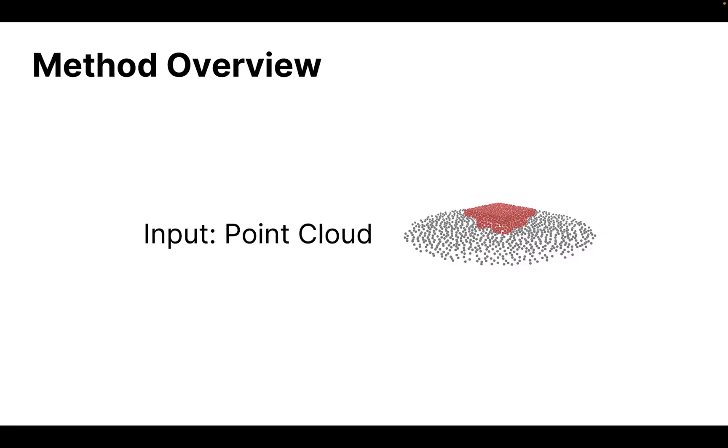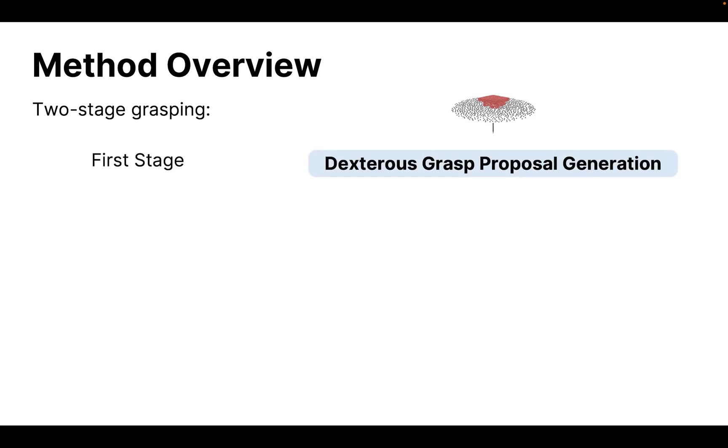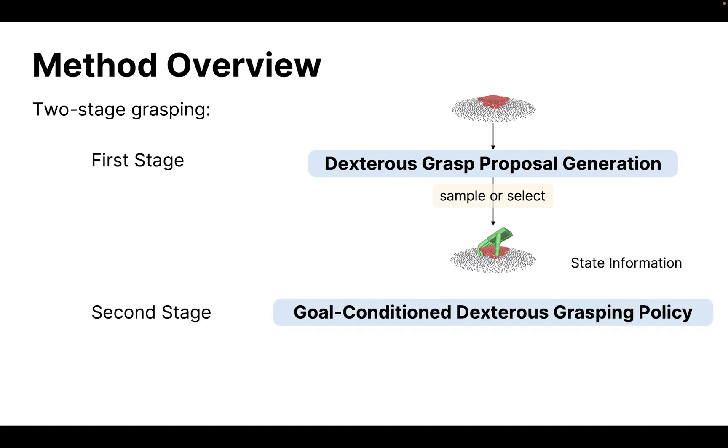Here is a high-level overview of our method. The input is a point cloud from depth. There are two stages in our algorithm. The first stage is the dexterous grasp proposal generation. We can sample or select the target grasp pose from this probabilistic model. Then, combined with the state information, our goal condition policy will execute the grasp in the simulator.